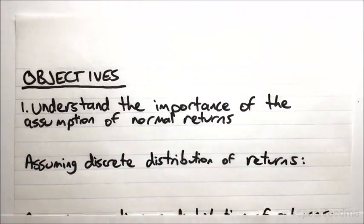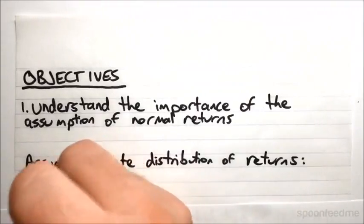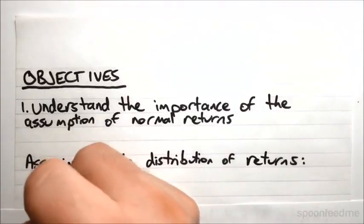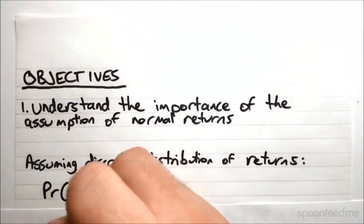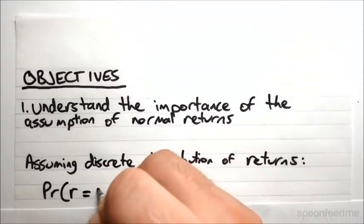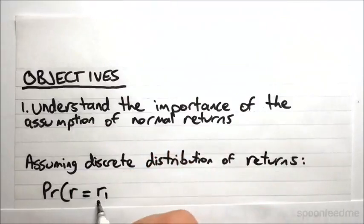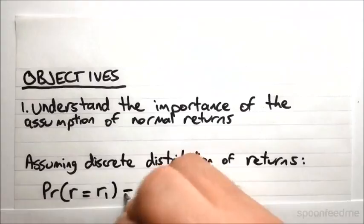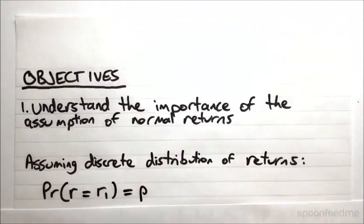Under the assumption of a discrete distribution, we said that the probability of the return equaling any given number, we'll just use R1 to indicate a possible return value, which is a constant, whereas R here is the variable, we say that this equals some constant that we'll just denote P.